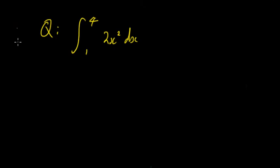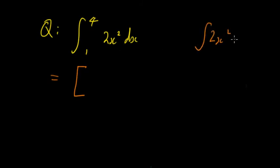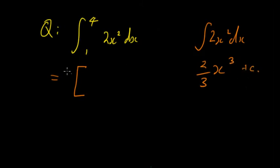Going through another example to see the method: we're going to calculate the definite integral from 1 to 4 of 2x squared dx. The first step is to integrate 2x squared dx. We add 1 to the power — 2+1 is 3 — then divide by the new power, giving us (2/3)x cubed. We don't need to worry about plus C here. So we have (2/3)x cubed evaluated with terminals 4 and 1.